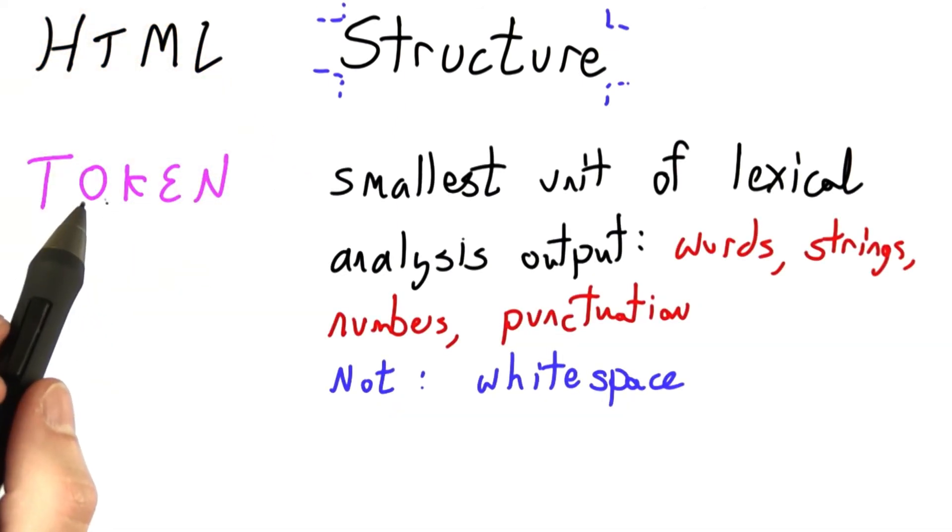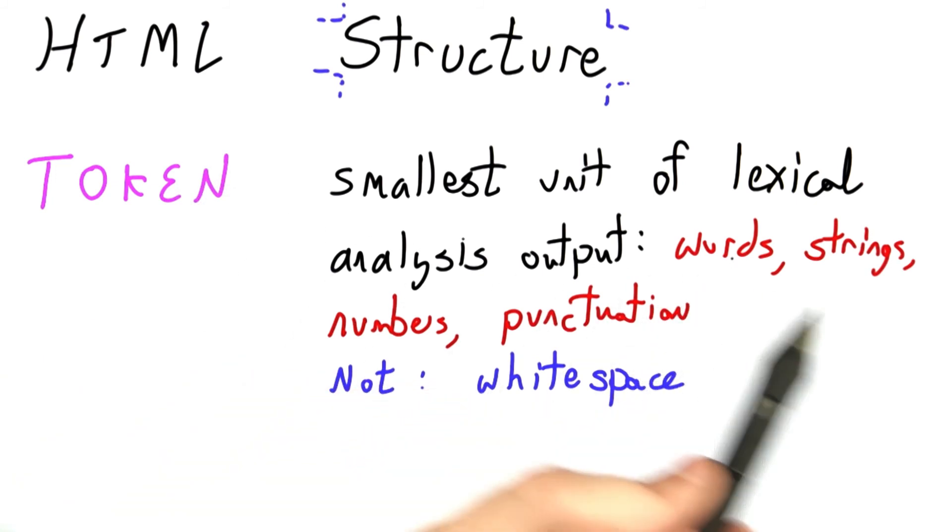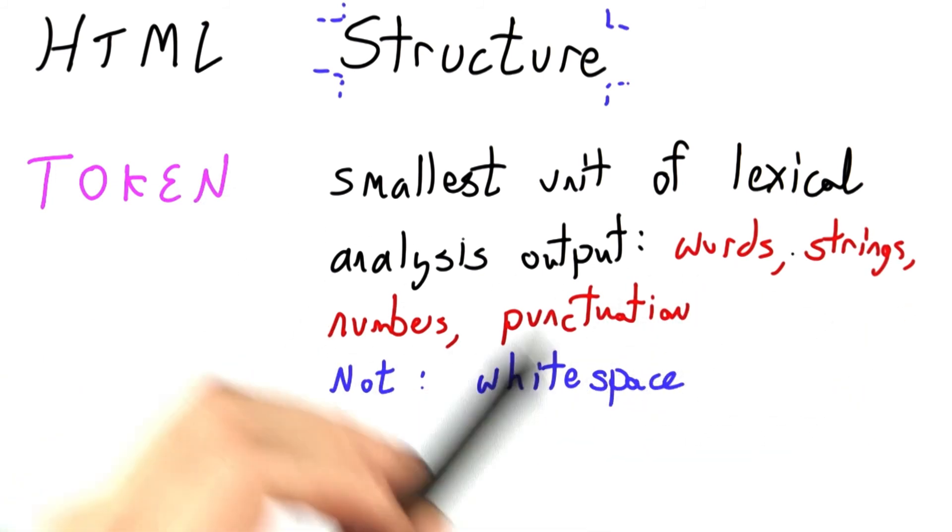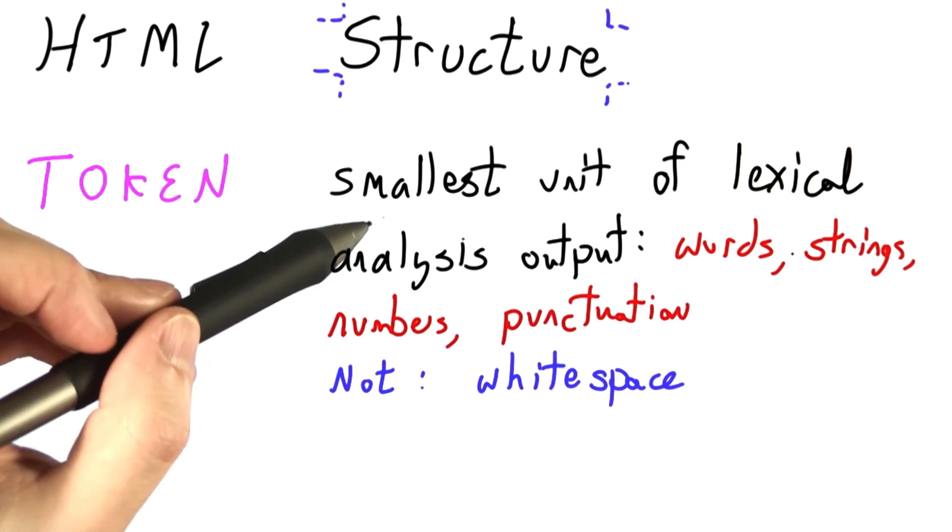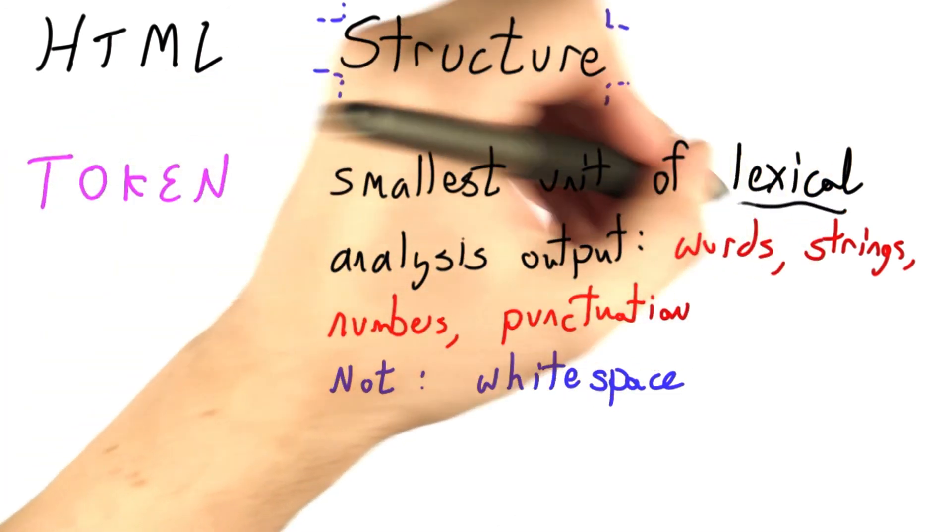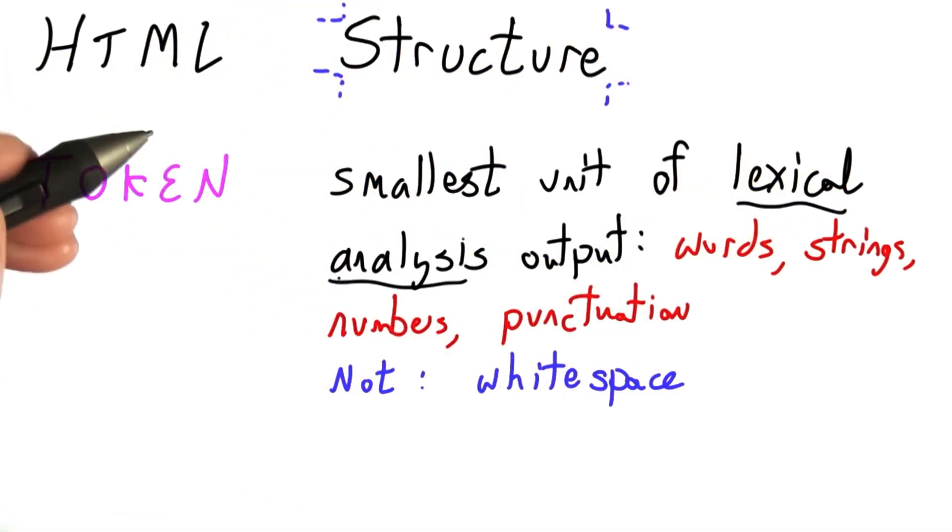In general, a token can refer to a word, a string, numbers, punctuation. It's the smallest unit of the output of lexical analysis. Remember, that's what we're currently working on.